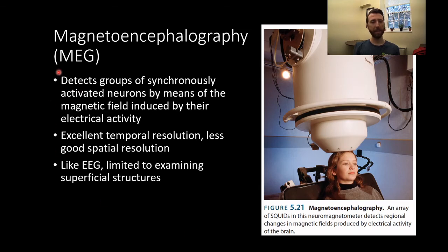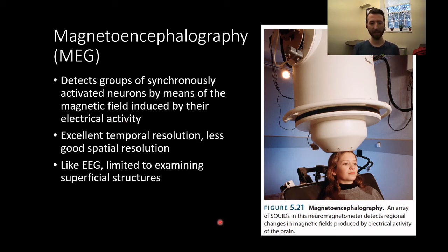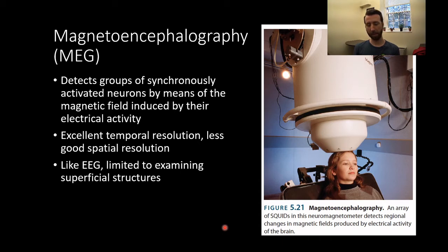MEG, or magnetoencephalography, allows us to detect groups of synchronously activated neurons by means of their magnetic field changing based on their electrical activity. An array of really strong magnets detects changes in magnetic fields produced by neuronal electrical activity. Like EEG, MEG has great temporal resolution but not so good spatial resolution, and it is also limited to examining superficial structures — you're limited to cortex and can't see below it.